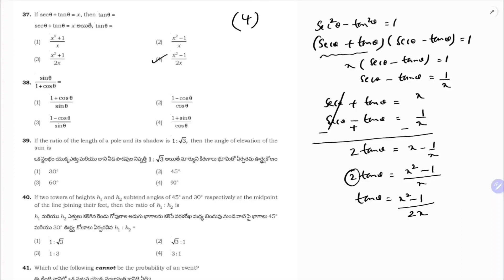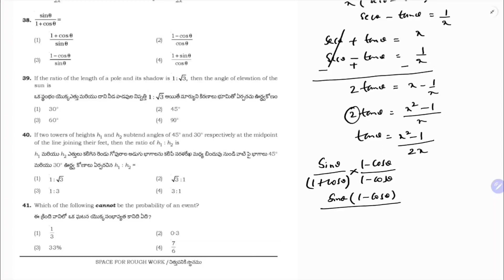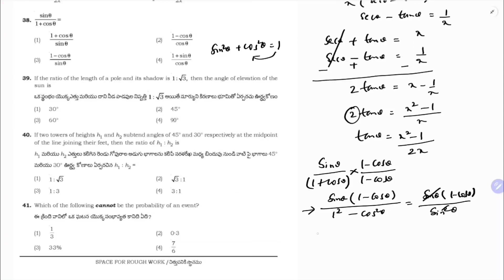sin θ/(1 + cos θ). Multiply numerator and denominator by (1 − cos θ): sin θ(1 − cos θ)/((1 + cos θ)(1 − cos θ)) = sin θ(1 − cos θ)/(1 − cos²θ) = sin θ(1 − cos θ)/sin²θ = (1 − cos θ)/sin θ. Correct option is 3.